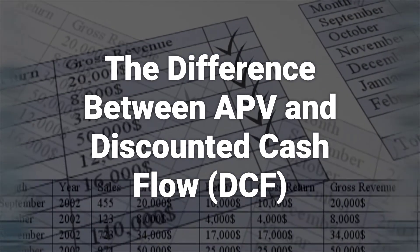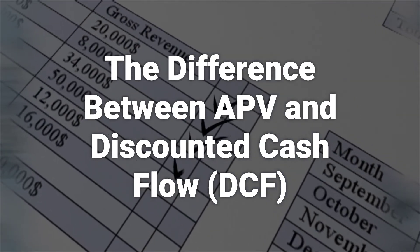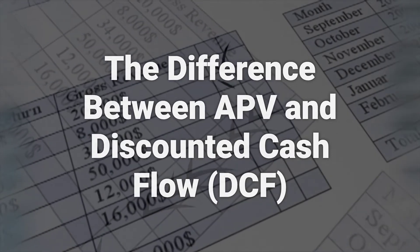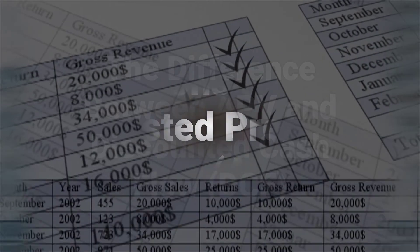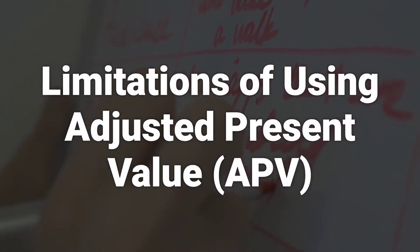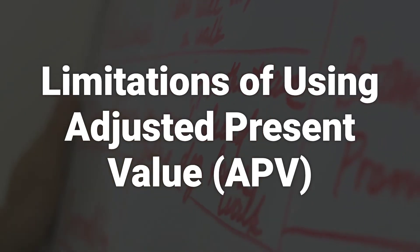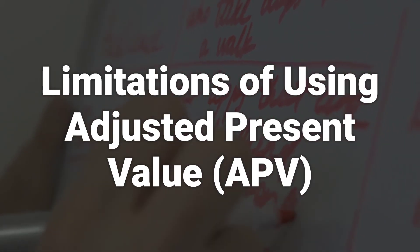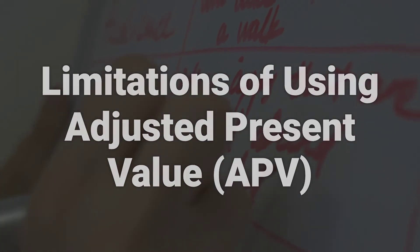Unlike WACC, adjusted present value seeks to value the effects of the cost of equity and cost of debt separately. The adjusted present value isn't as prevalent as the discounted cash flow method. In practice, it is more of an academic calculation but is often considered to result in more accurate valuations.